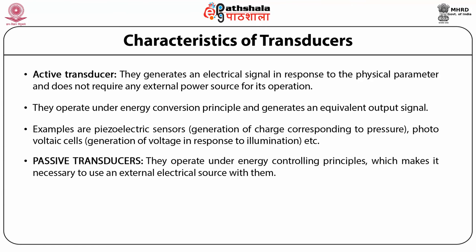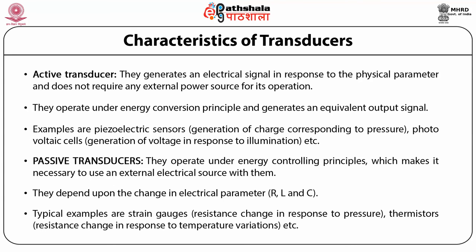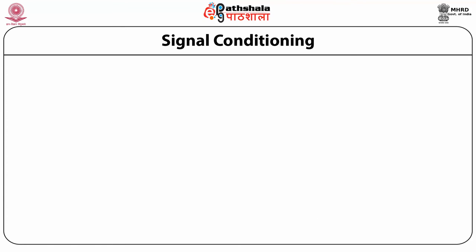A passive transducer operates under energy controlling principles, which makes it necessary to use an external electrical source with them. They depend upon the change in electrical parameters R, L and C. Typical examples are strain gauges — where resistance changes in response to pressure — and thermistors — where resistance changes in response to temperature variations.